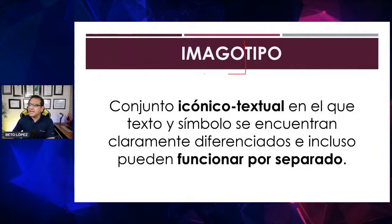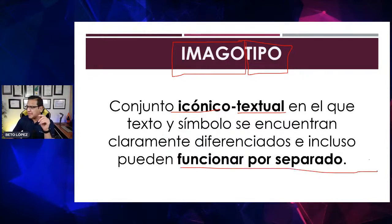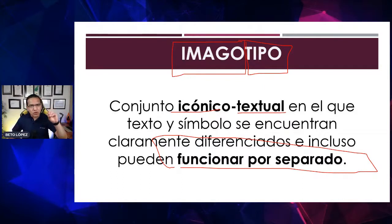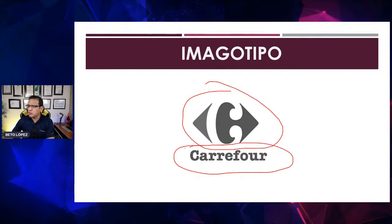Luego viene el imagotipo, que es el ícono y el texto juntos. La ventaja del imagotipo sobre el isotipo es que pueden funcionar por separado: los puedes unir o colocar por separado. Entonces, logotipo es la letra, isotipo es el ícono, y el imagotipo es tanto la imagen como el texto, pero podrían separarse. Por ejemplo, se utiliza el ícono por una parte y el texto por otra.